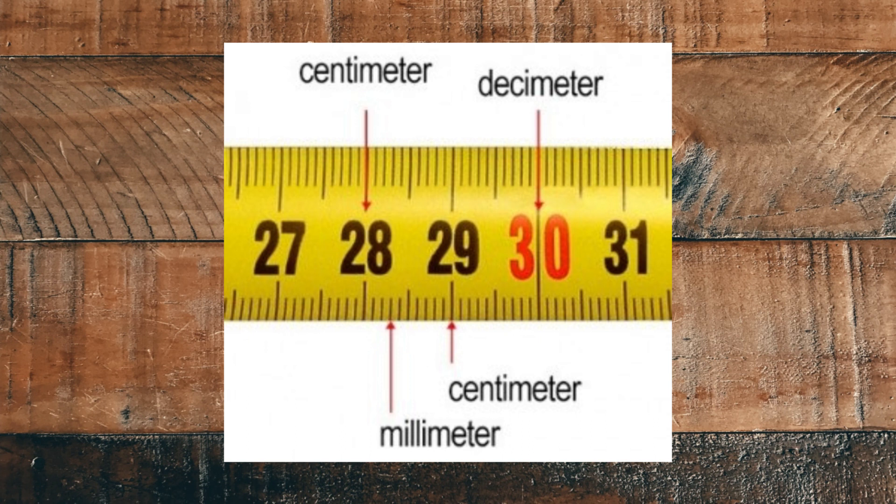Which is one-tenth of a decimeter. Lastly, the small lines in between the centimeters are millimeters. All you have to do is read the larger lines, centimeters, and then the number of millimeters of the last centimeter if the object does not measure an exact number of centimeters.